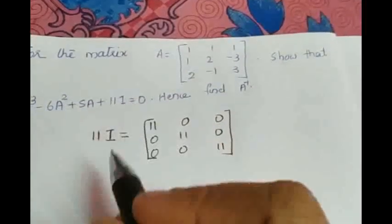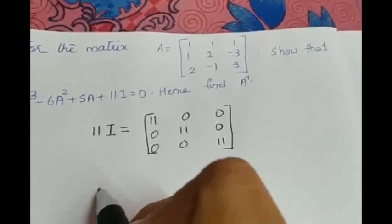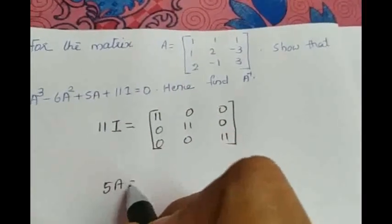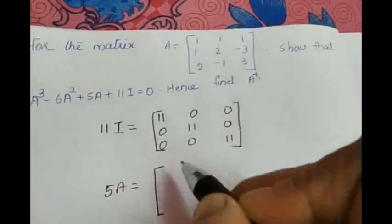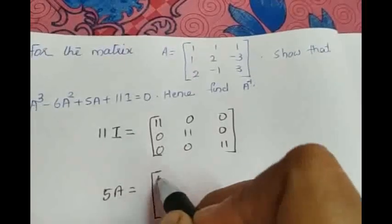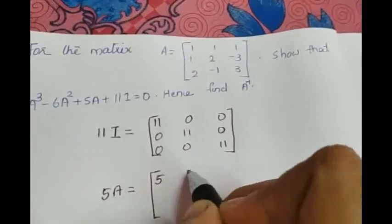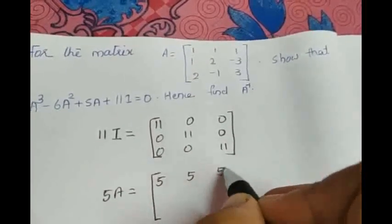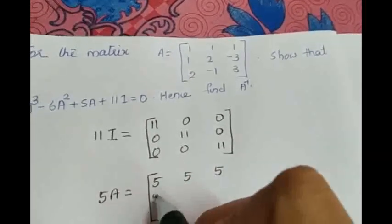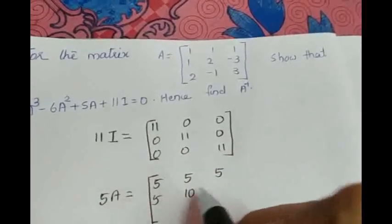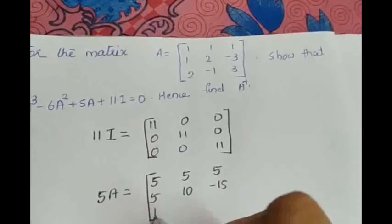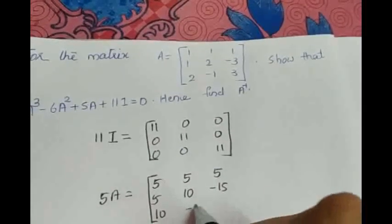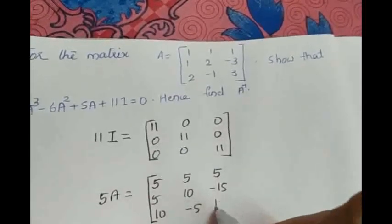The next term we require is 5A. 5A is equal to multiplying each and every element of A with 5. So, it is 5, 5, 5, 5, 10, minus 15, 10, minus 5, 15.